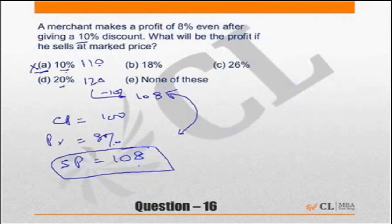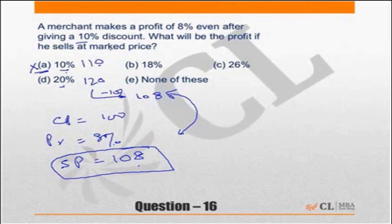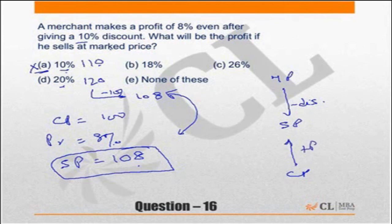The key relationship to remember: mark price minus discount gives you the selling price, and cost price plus profit gives you the selling price — both must be equal. For such questions, you can always work with the answer choices, especially if you are not comfortable with division.